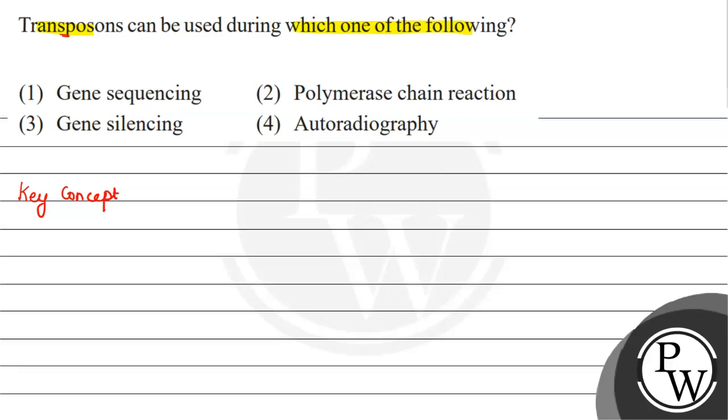If we talk about the key concept, the key concept here will be transposons. First, let's see what transposons are. We can call them jumping genes. These are jumping genes because they can move from their position. These are mobile genetic elements which can change their position.